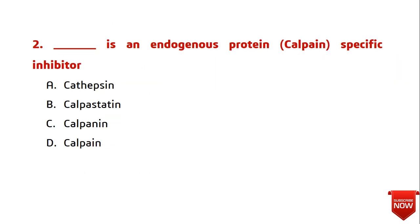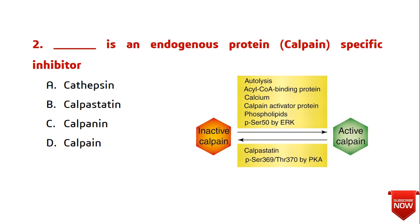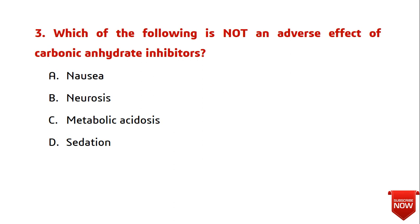Question two: dash is an endogenous protein calpain-specific inhibitor. Calpain is a calcium-dependent cysteine protease associated with apoptosis — the death of cells — and myogenesis — the formation of muscle tissue. The inactive form of calpain converts to its active form, which is then inhibited by calpastatin. So the answer is calpastatin, which is the endogenous protein specific inhibitor of calpain.